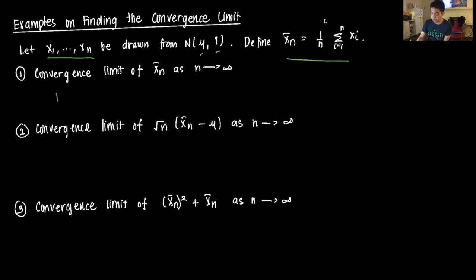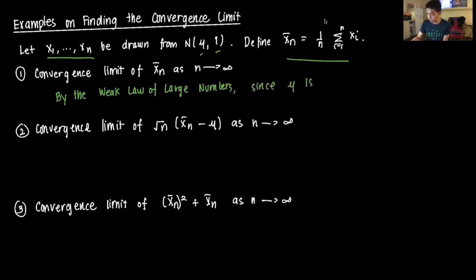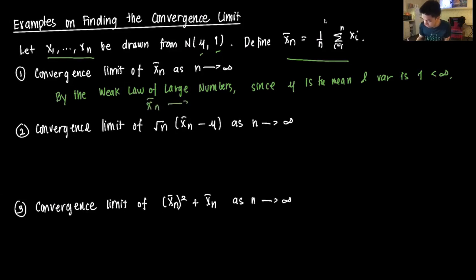By the weak law of large numbers, since μ is the mean and the variance is 1, which is less than infinity — a finite variance — x̄ₙ converges in probability to μ. And that's the convergence limit; it just converges to μ.